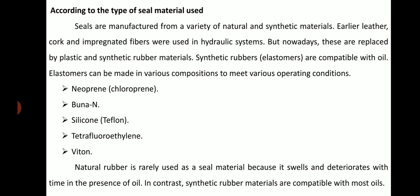According to the type of seal material used, seals are manufactured from a variety of materials and synthetic materials. Earlier, leather, cork, and impregnated fibers were used in hydraulic systems. But nowadays, these are replaced by plastic and synthetic rubber materials. Synthetic rubber elastomers are compatible with oil and can be made in various compositions to meet various operating conditions.